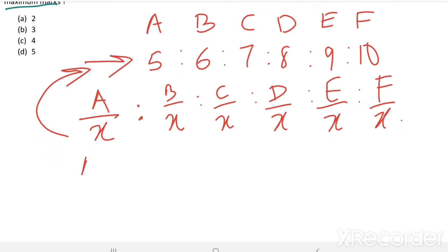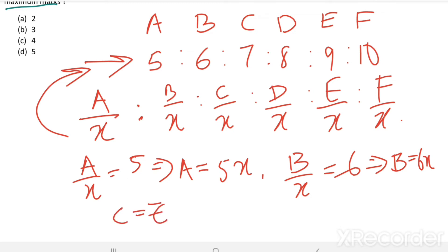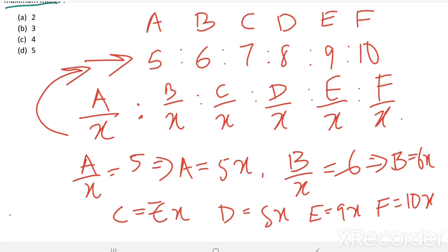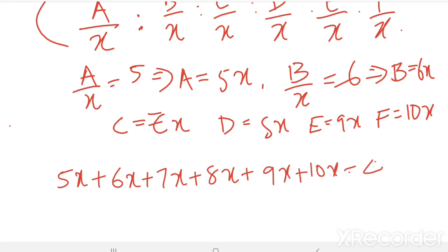From here we can say A/x = 5, so actual marks in the first paper A = 5x. Similarly B = 6x, C = 7x, D = 8x, E = 9x, F = 10x. Then total marks obtained by the student in all 6 papers equals 5x + 6x + 7x + 8x + 9x + 10x = 45x.